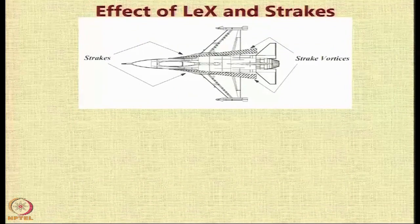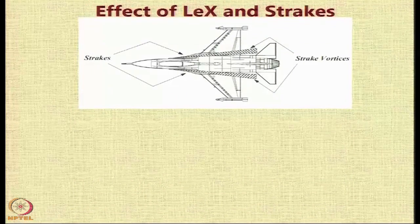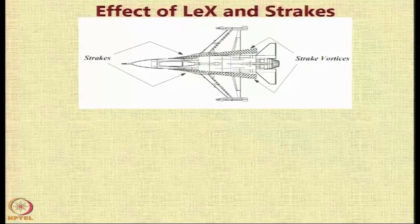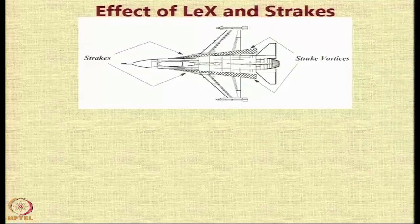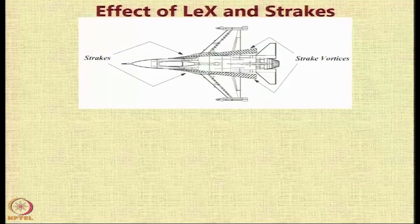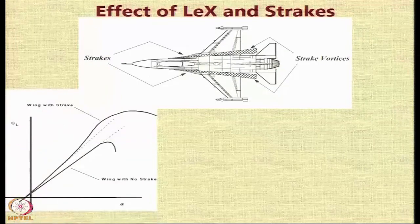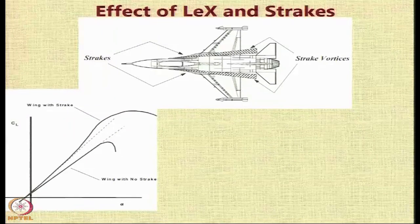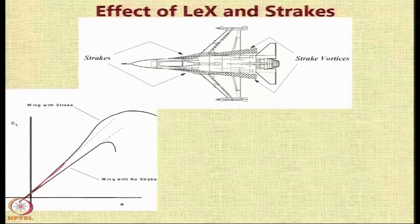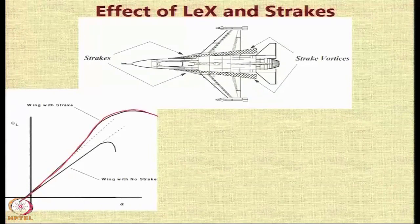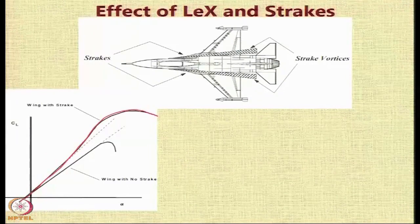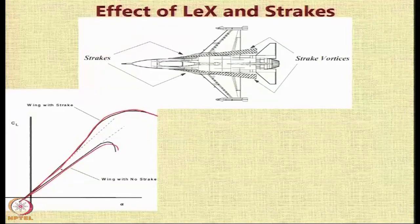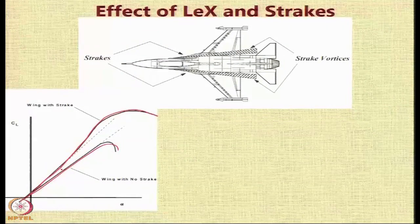In military aircraft, we sometimes see strakes mounted at the root of the fuselage of the wing near the fuselage, and these strakes create a vortex. So we call them as either leading edge extensions, LEX, or strakes. And the effect of the strakes is to create an increase, a non-linear increase in the lift curve slope. So with no strakes, when you have a linear curve, with strakes it becomes little bit non-linear and it is beneficial.